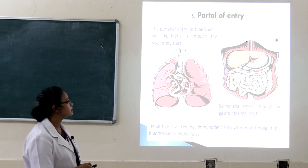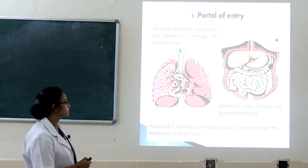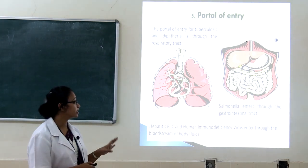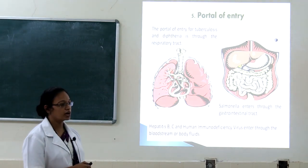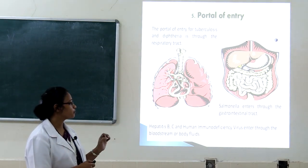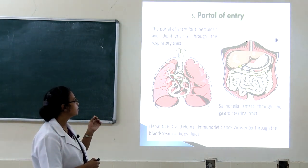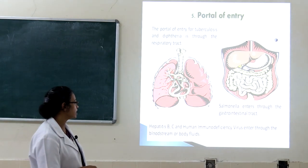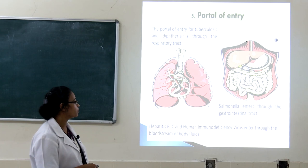The fifth component is the portal of entry — the tract through which microorganisms enter the body. For tuberculosis and diphtheria, the portal of entry is the respiratory tract. For Salmonella, the portal of entry is the gastrointestinal tract. Hepatitis B, hepatitis C, and HIV enter through the bloodstream or other body fluids.